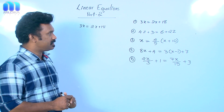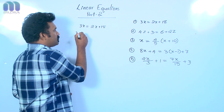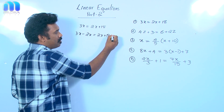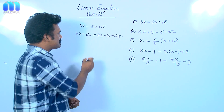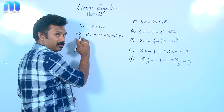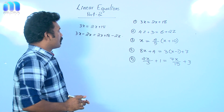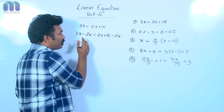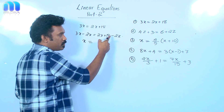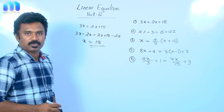So, 3x equal to 2x plus 18. I am going to subtract 2x from both sides of the equation. Then 3x minus 2x is equal to 2x plus 18 minus 2x. On the left side, 3x minus 2x; from the right side also I have subtracted 2x. Now, 3x minus 2x is 1x, meaning x is equal to — here 2x minus 2x becomes 0 — so 0 plus 18, that is 18. x equal to 18 is the solution of this equation.